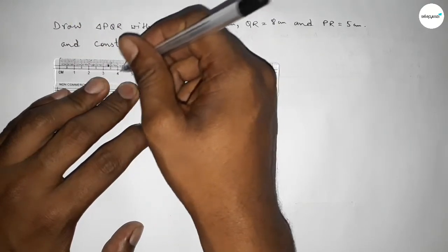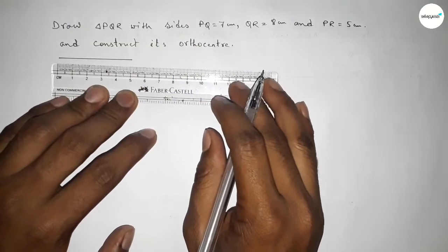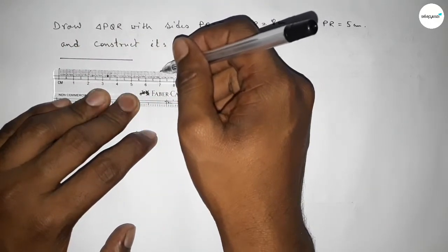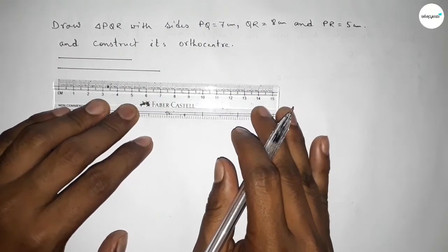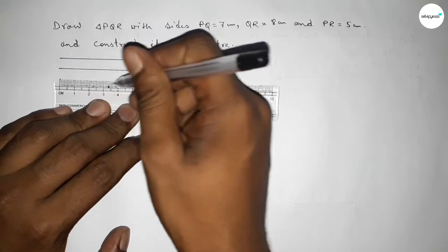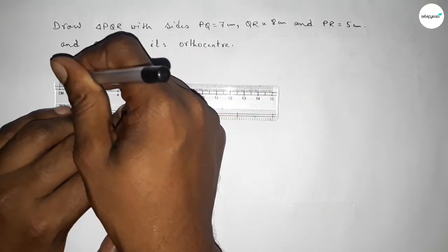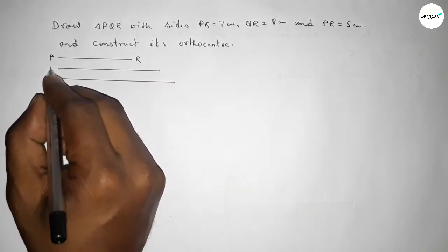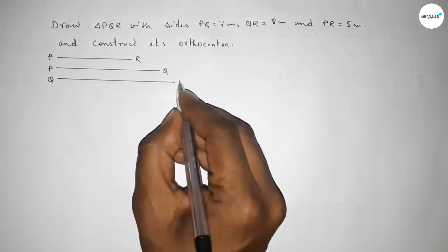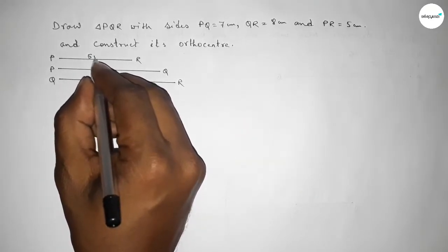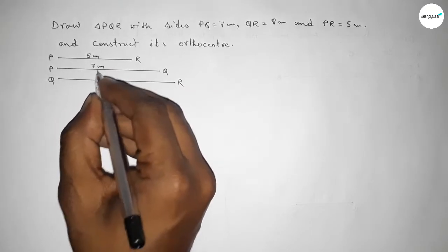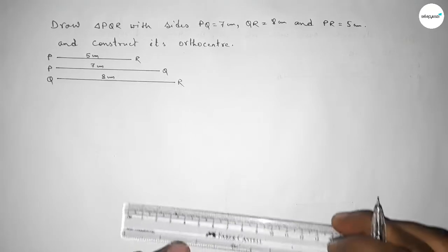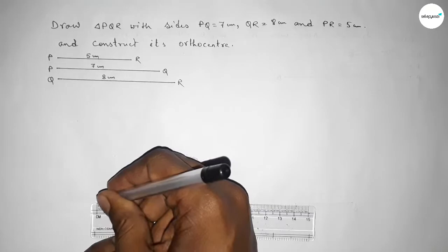First drawing a line of length 5 centimeter, then drawing another line of length 7 centimeter, and last drawing a line of length 8 centimeter. So this one is PR, this one is PQ, and this one is QR — side 5 centimeter, side 7 centimeter, and side 8 centimeter.